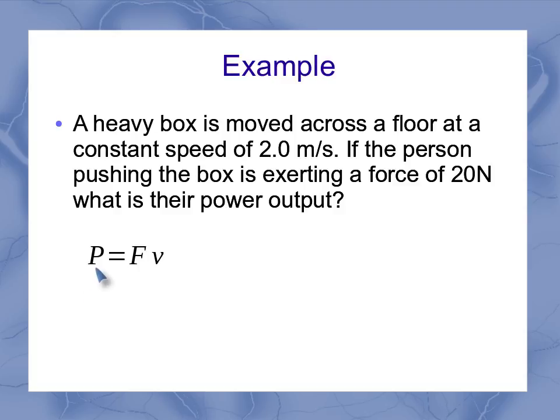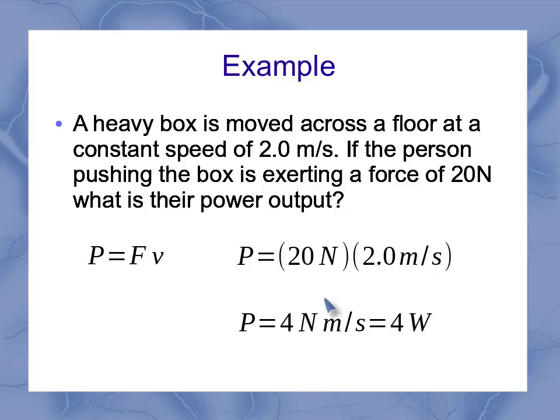If I look at my equation, the power output of that person equals the force they're exerting and the velocity that they're managing to get the box moving. So that would be our 20 newtons times our 2 meters per second, or 40 newton meters per second.